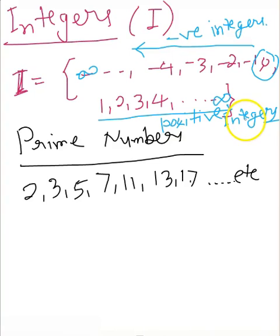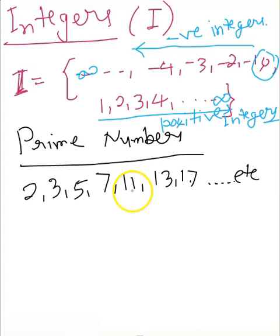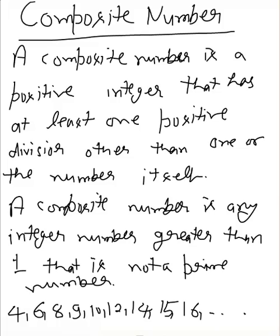What are prime numbers? By definition, prime numbers are those positive integers which are divisible only by 1 or by themselves. There is no other number which can divide them except 1 and the number itself. For example, 2 is a prime number because it cannot be divided by any other number except 1 and 2. The prime numbers are 2, 3, 5, 7, 11, and so on.